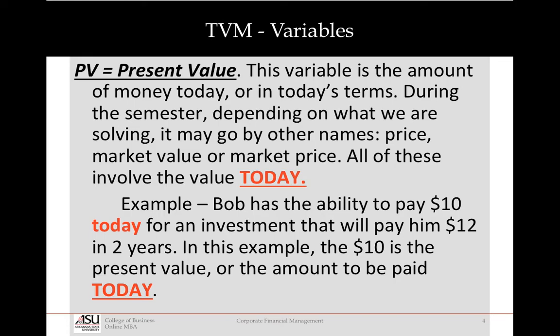PV is present value. It's the amount of money today, or in today's terms. We're going to call it different things throughout the semester — sometimes it's called price, sometimes market value, sometimes market price. But all of these involve the value today, this instant. So if Bob has the ability to pay $10 today, that $10 is the present value.